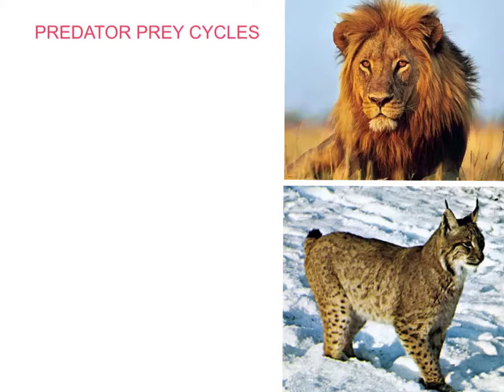Now, I've put here two big top predators. Well, the lion's certainly a top predator in its food chain. Nothing would eat it, and it's one of my favourite of the mammals.